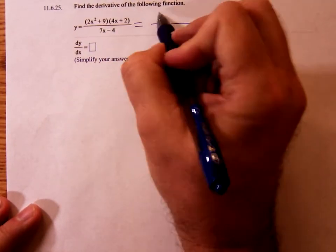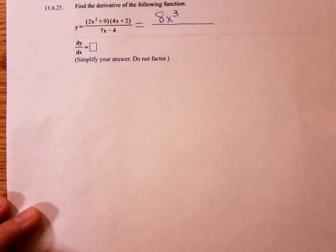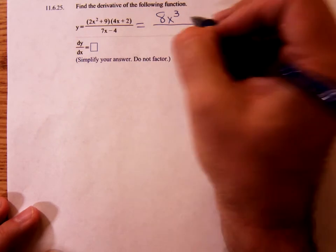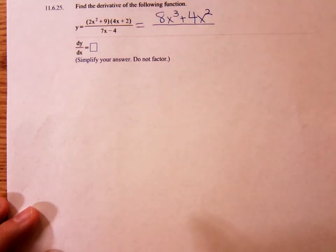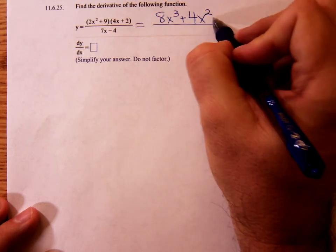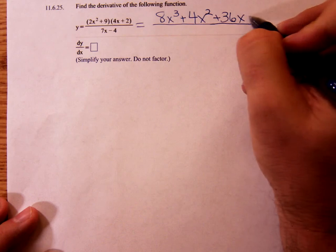That's 8x cubed. Is that focused? Yes. Outer, we have a plus 4x squared. Inner, plus 36x, and last, plus 18.